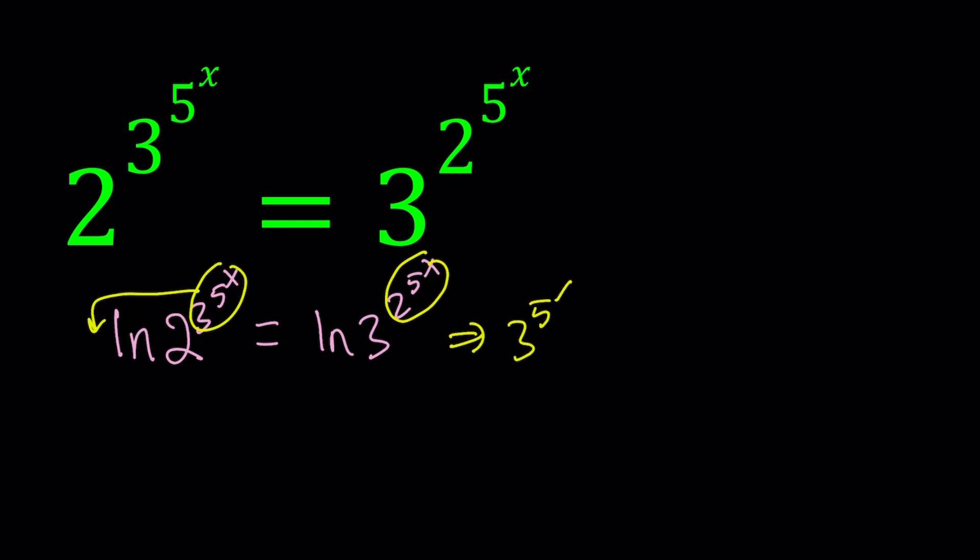3 to the power 5 to the power x multiplied by ln 2 equals 2 to the power 5 to the power x, which is the exponent, multiplied by ln 3.